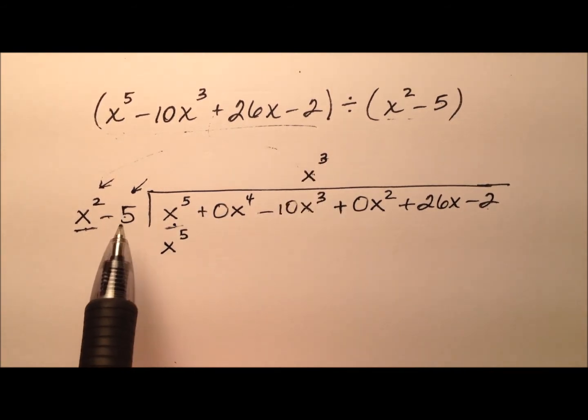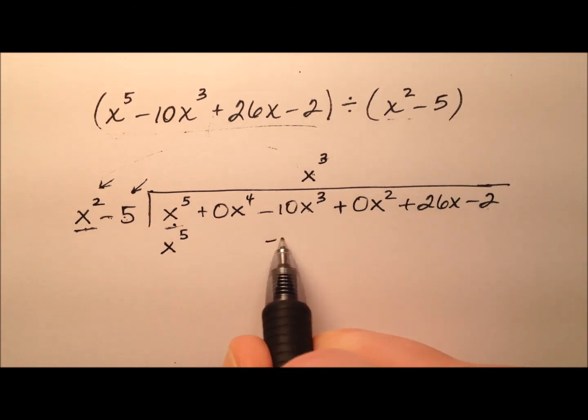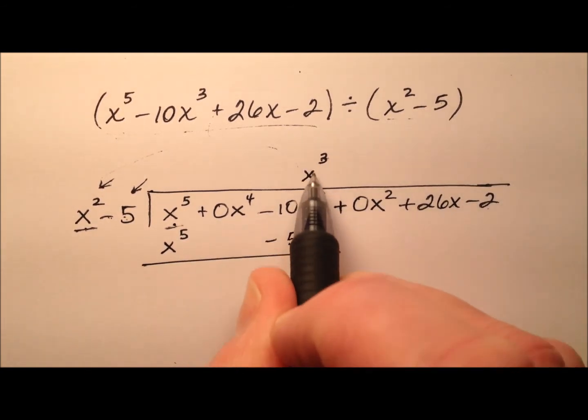So x squared times x cubed will be x to the fifth and here's where we have to be careful. So x cubed times negative 5 is negative 5x cubed and we actually have to come over here and put it.